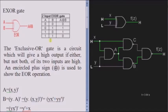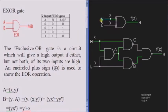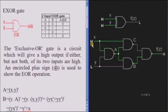As stated earlier, if any one input is high and the other is low, then the output is high. We can see here that one input is high and another is low, giving a high output. If both inputs are low, the output is low. If both inputs are high, the output is also low.